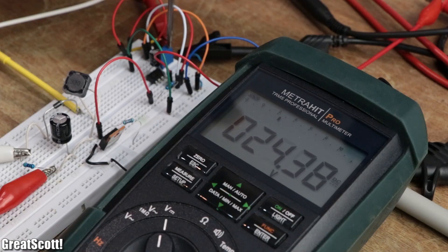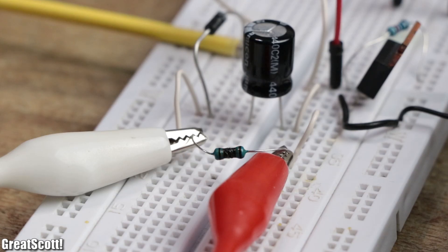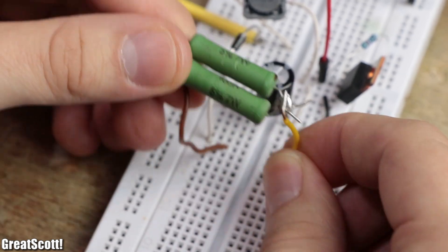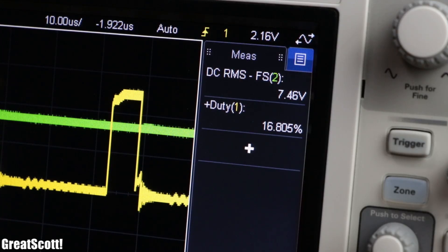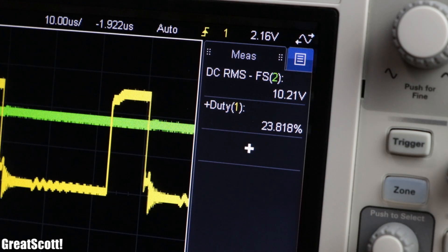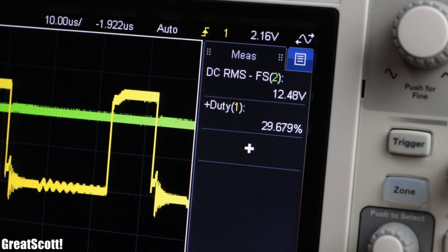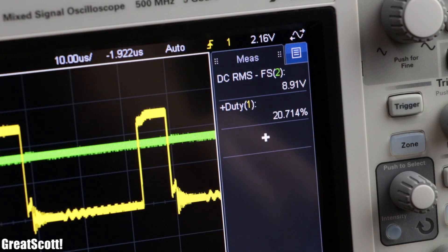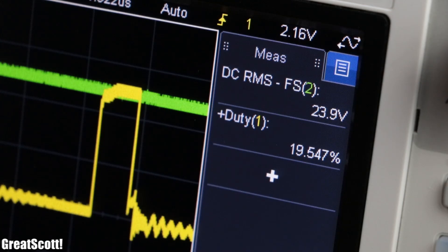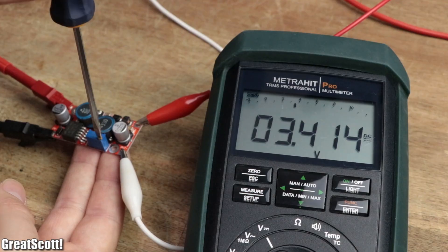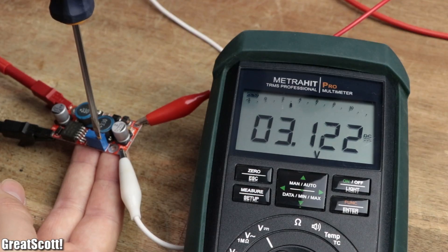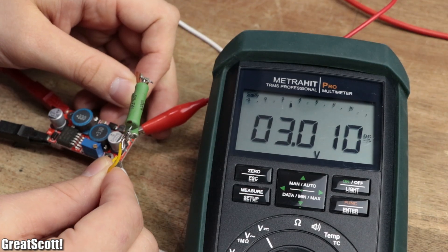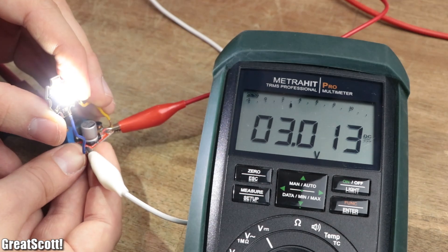But here's the problem. If I attach a bigger load to the output, the border between buck and boost mode moves upwards to a duty cycle of 29%. So a duty cycle of, for example, 20% might represent 8.8 volts for big loads but around 25 volts for small loads. And that is something a normal buck-boost converter does not do. It has a fixed output voltage. So we have to get rid of it.